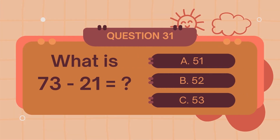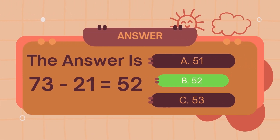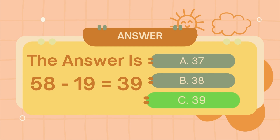What is 73 minus 21? The answer is 52. What is 58 minus 19? The answer is 39.